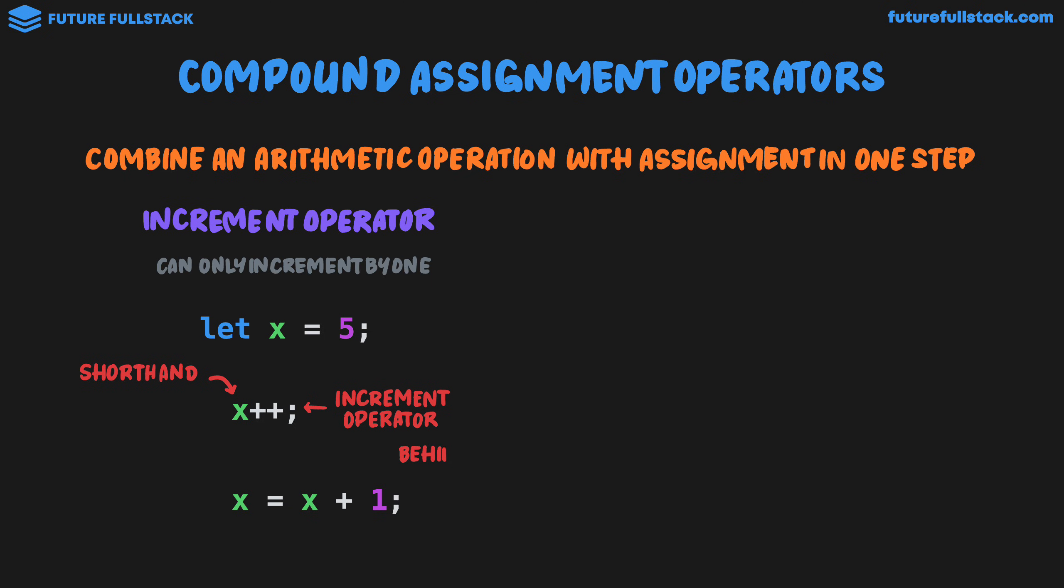Now this is actually a shorthand. What's actually happening behind the scenes is this: we have x equals x plus 1. And these are equivalent. They're achieving the same thing. That is incrementing the value of 5 by 1. So the big thing with the increment operator is that it can only increment by 1 at a time.